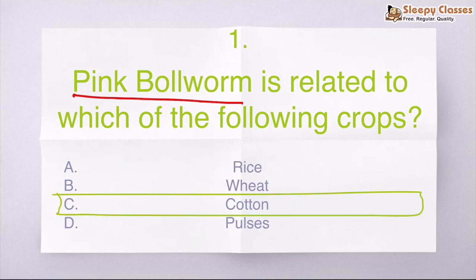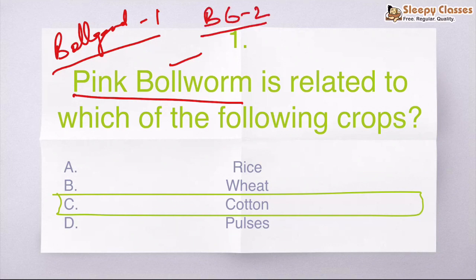The correct answer is C, cotton. So Pink Bollworm - if we trace its history, then Bollgard variety, Bollgard 1, these varieties are cotton, Bt cotton which we are talking about. These varieties were resistant to these bollworms. So this is presently cultivated in India, that is BG2. But the problem is that the pink bollworm has developed resistance against these two varieties.